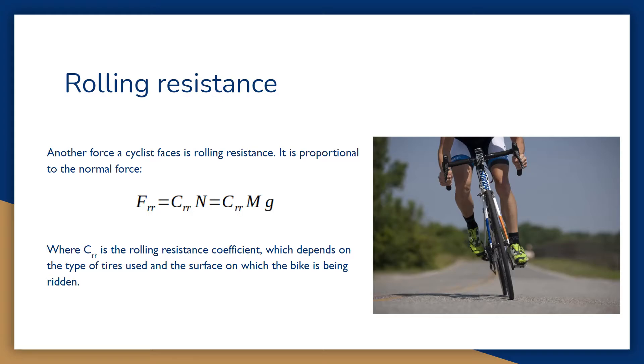Another force a cyclist faces is rolling resistance. It is proportional to the normal force, where Crr is the rolling resistance coefficient, which depends on the type of tires used and the surface on which the bike is being ridden.